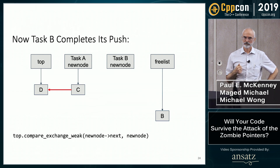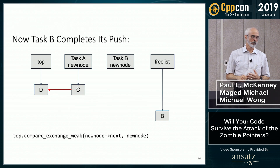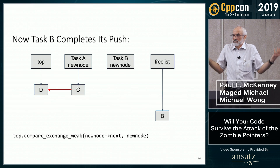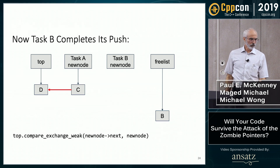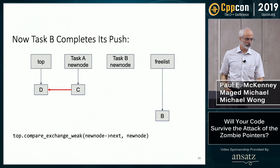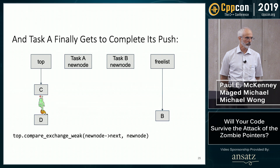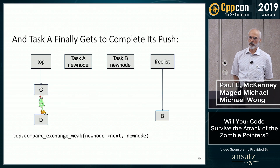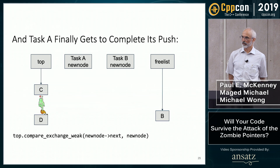Task B pushes D onto the list — and if you remember, that's exactly the same configuration we had just before task A paused, except the pointer is red. It's pointing at the same address. With dash-O or assembly or a very simple compiler, all the addresses look perfectly fine in memory. But C++ and C aren't happy about this. Now task A finally gets done and completes its push — the compare_exchange_weak succeeds. The bits are the same. compare_exchange is defined to operate on bits, not on pointers as such. And so we have a zombie pointer now.